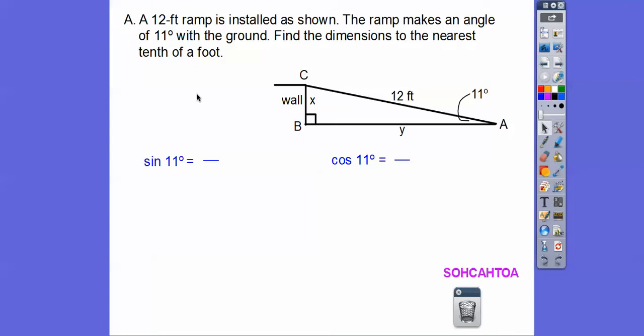This is section A. Yes, I want you to write this part down here. Sine is opposite over hypotenuse. 12 is the hypotenuse. So the sine of 11 is x over 12, and the cosine of 11 is adjacent, which is y over 12.